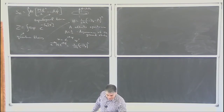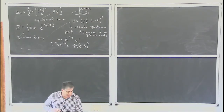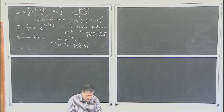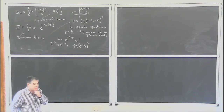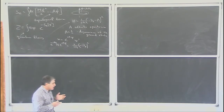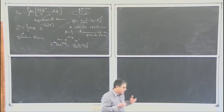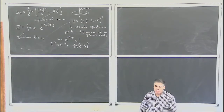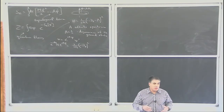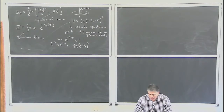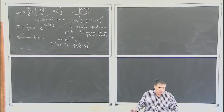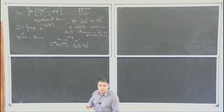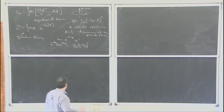Before going to the topic of this lecture, let me spend about ten minutes on quantum anomalies. I've chosen a unifying perspective on topological phases by talking about topological terms — terms in the effective action which do not depend on metric. But there are other points of view. One very powerful and unifying way is using the concept of quantum anomalies.